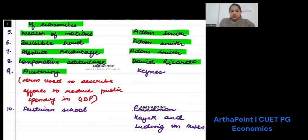Austerity is a term that is used to describe efforts to reduce public spending on GDP. It was given by Keynes.